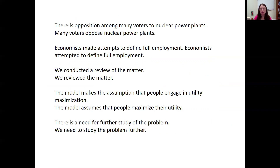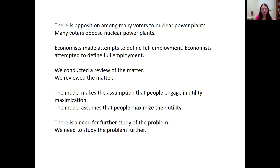Here are examples of the same sentence with and without nominalizations. First: 'There is opposition among many voters to nuclear power plants.' The nominalization is 'opposition.' The better alternative is: 'Many voters oppose nuclear power plants.' Instead of using the nominalization 'opposition,' which forces a 'there is' construction at the beginning, we use the verb 'oppose' and can directly say who is doing the opposing. That's shorter and much clearer.